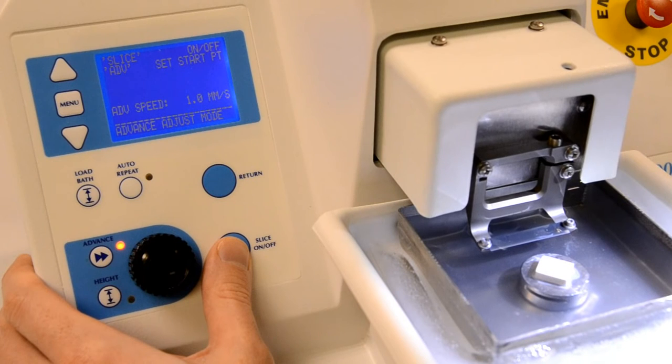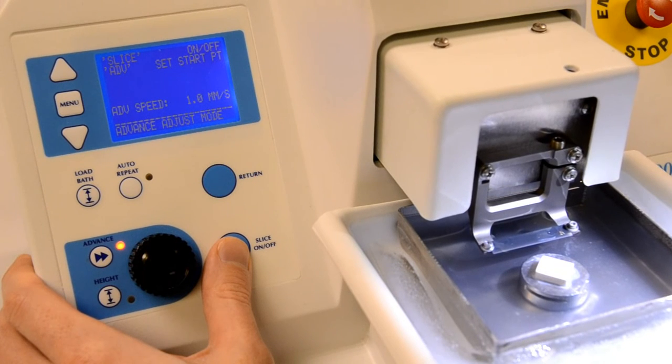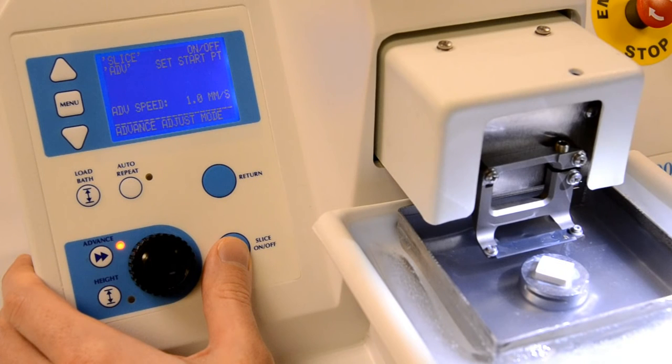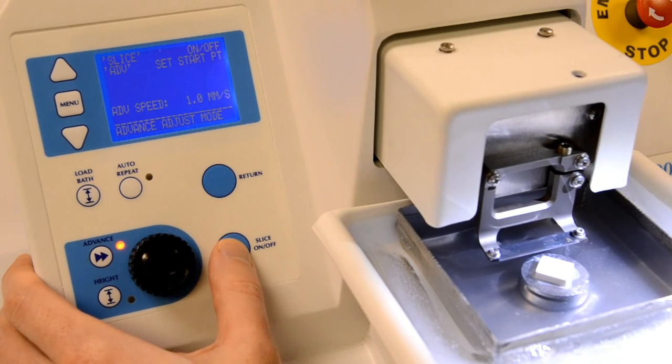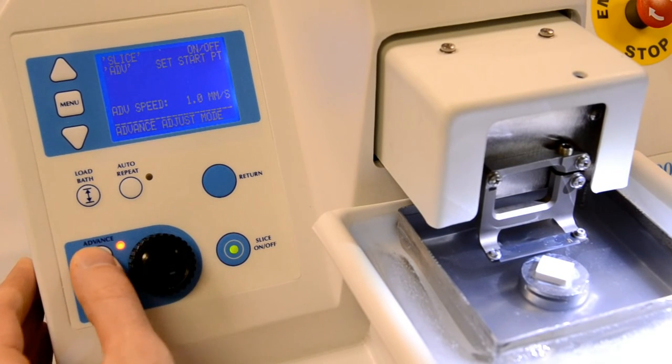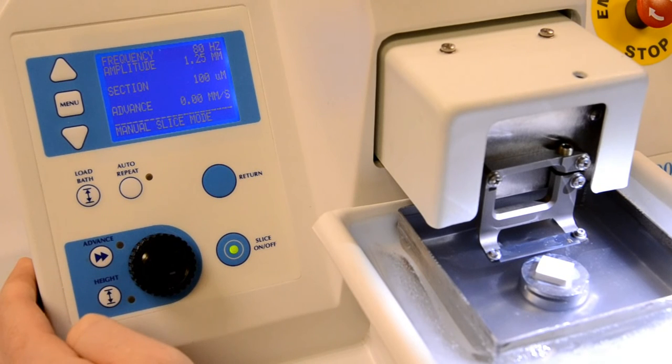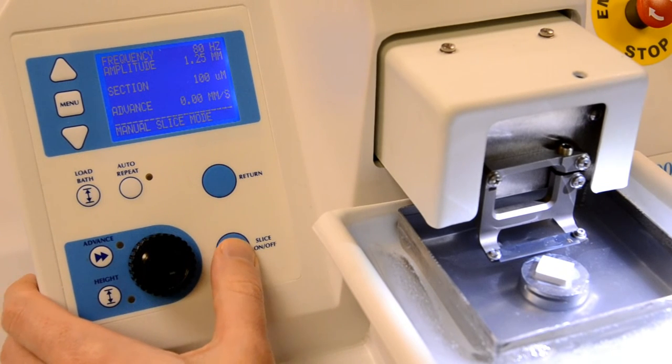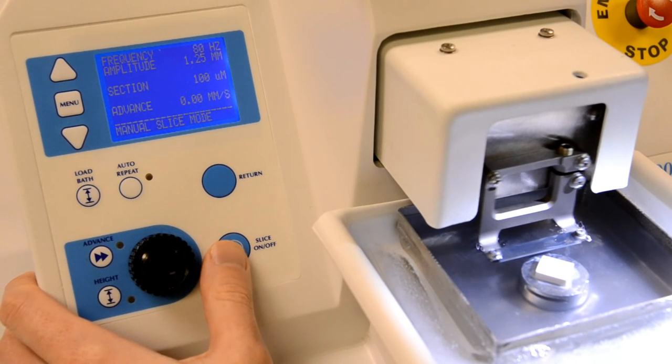Note that the rotary knob will allow you to reduce the advance speed past zero into negative values and move the head backwards. When the head is in the desired position, press the advance key again. This is the position to which the head will return after a slice is taken and the return key is pressed.